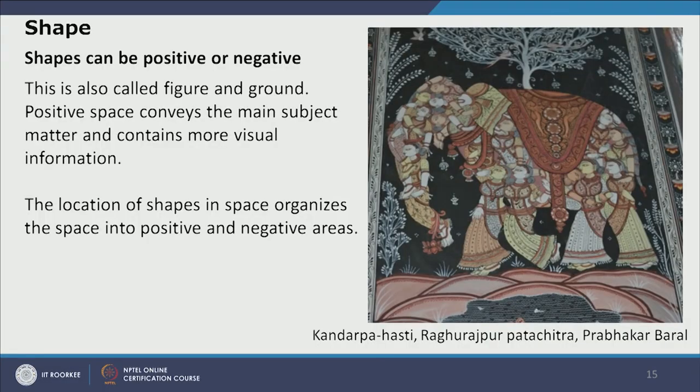Rectilinear shapes, being more angular and linear, suggest geometry and hence appear artificial and manufactured. Curvilinear shapes provide more freedom — curvilinear shapes can also be geometric, for example circles, ellipses, and parabolic shapes. Shapes can also be defined as positive or negative. Positive shapes are considered as figure, and negative shapes are considered as ground.